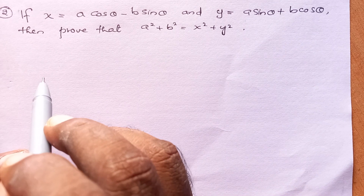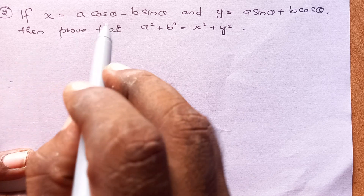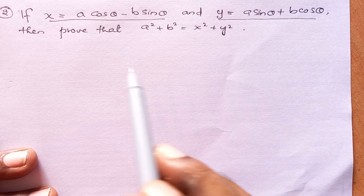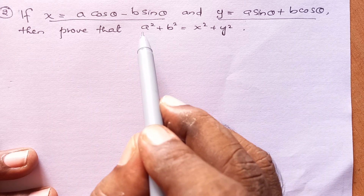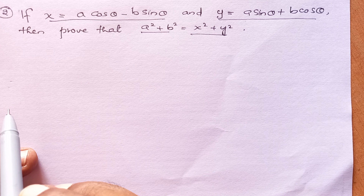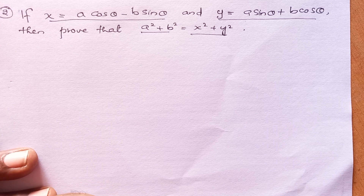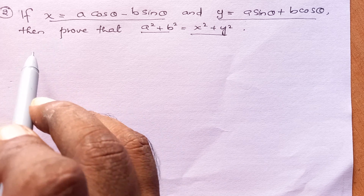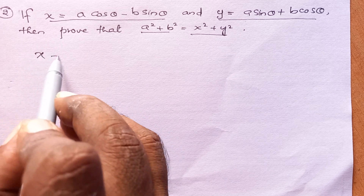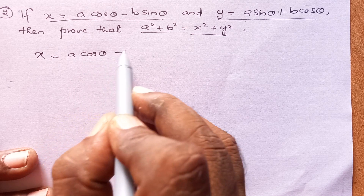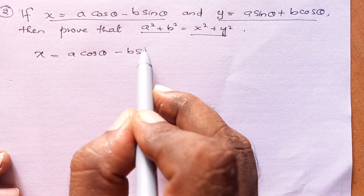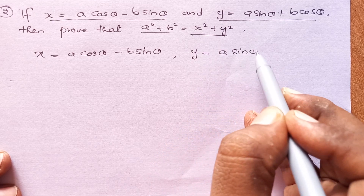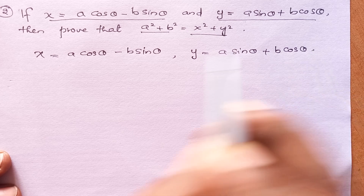Let's do another question. If x is equal to a cos theta minus b sin theta, and y is equal to a sin theta plus b cos theta, then prove that a square plus b square is equal to x square plus y square. So, the things given here are x equals a cos theta minus b sin theta and y equals a sin theta plus b cos theta.